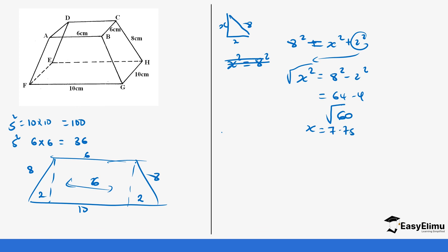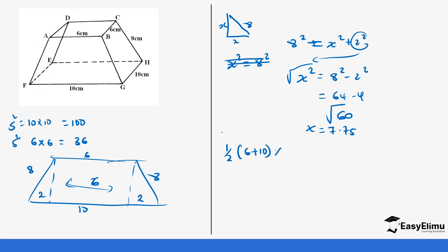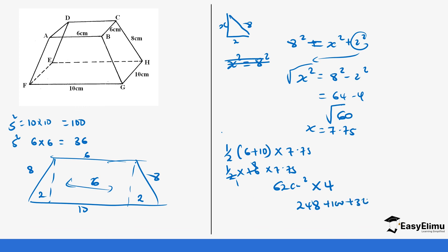More precisely, x equals 7.75 since it is 7.7459. The area of the trapezium is one half times bracket 6 plus 10 times height 7.75. That is one half times 16 times 7.75, which equals 8 times 7.75, giving us 62 centimeters squared. Multiplying by 4 for the four trapeziums gives 248. Adding the square areas: 248 plus 100 plus 36 gives us 384 centimeters squared.